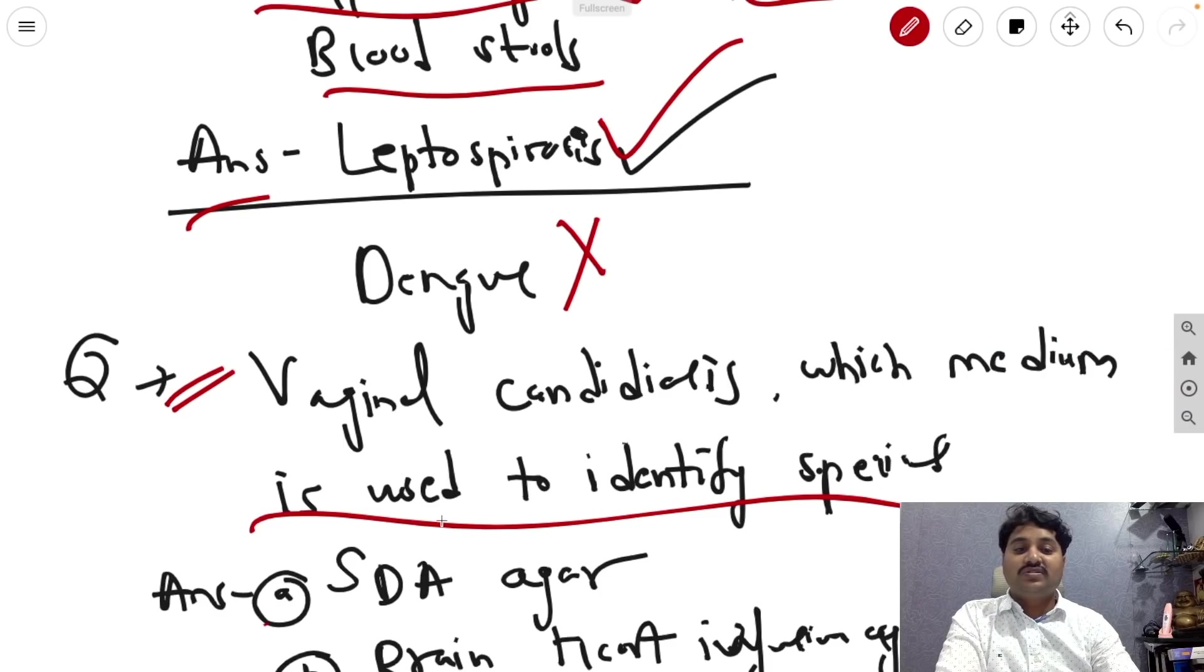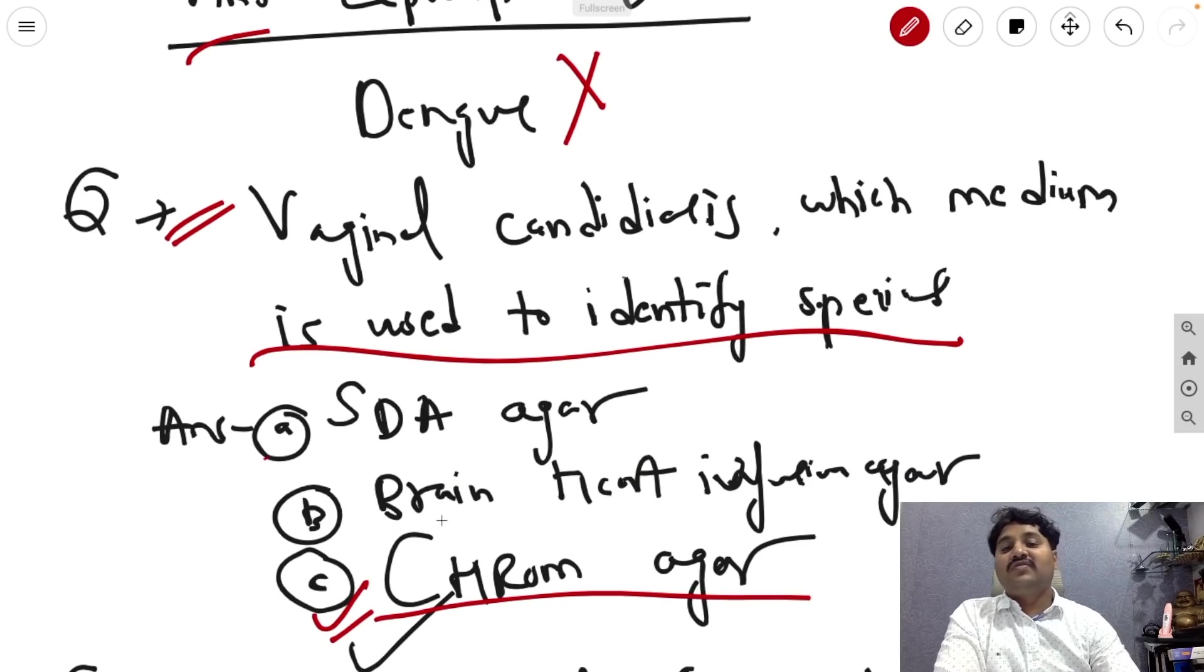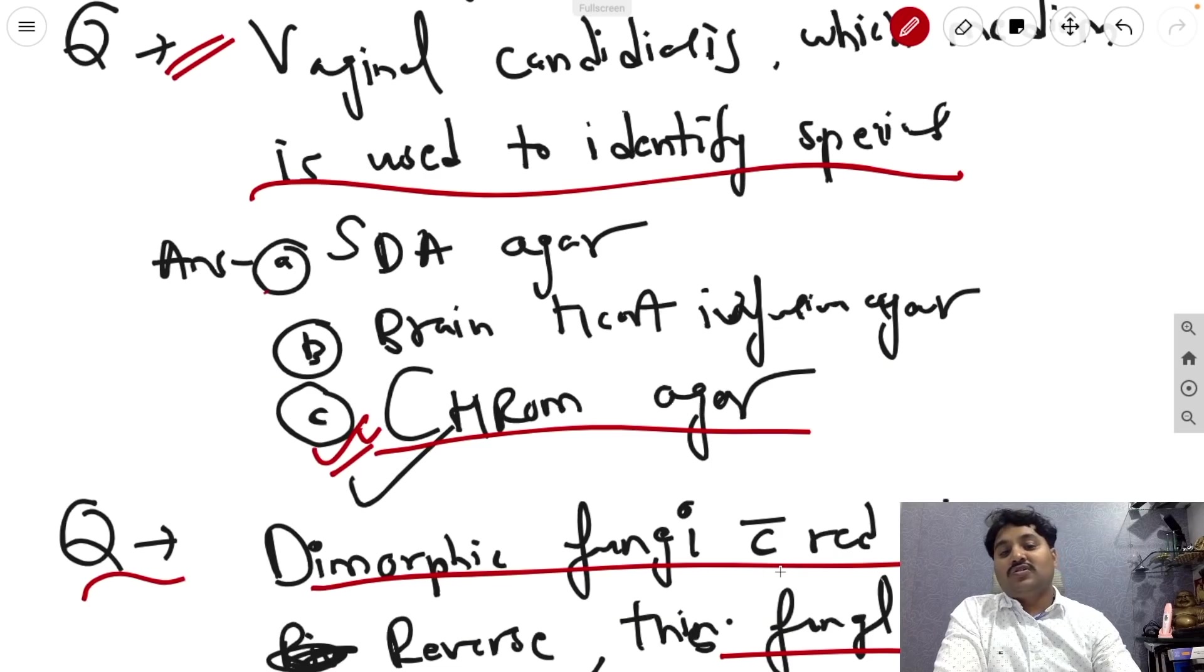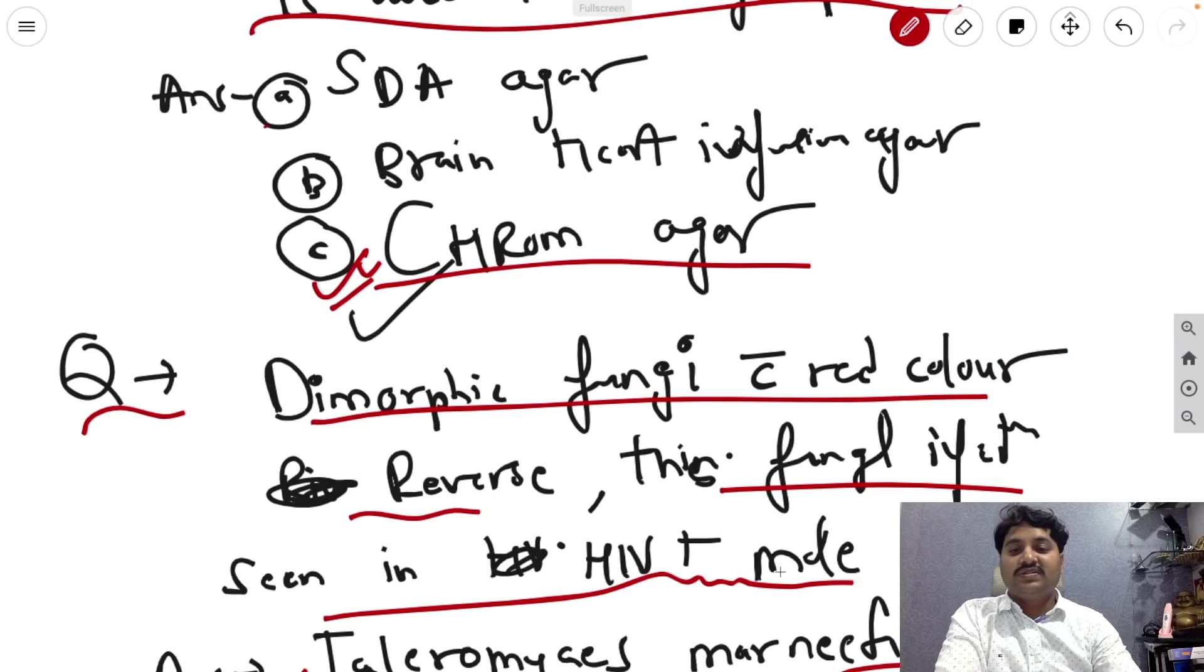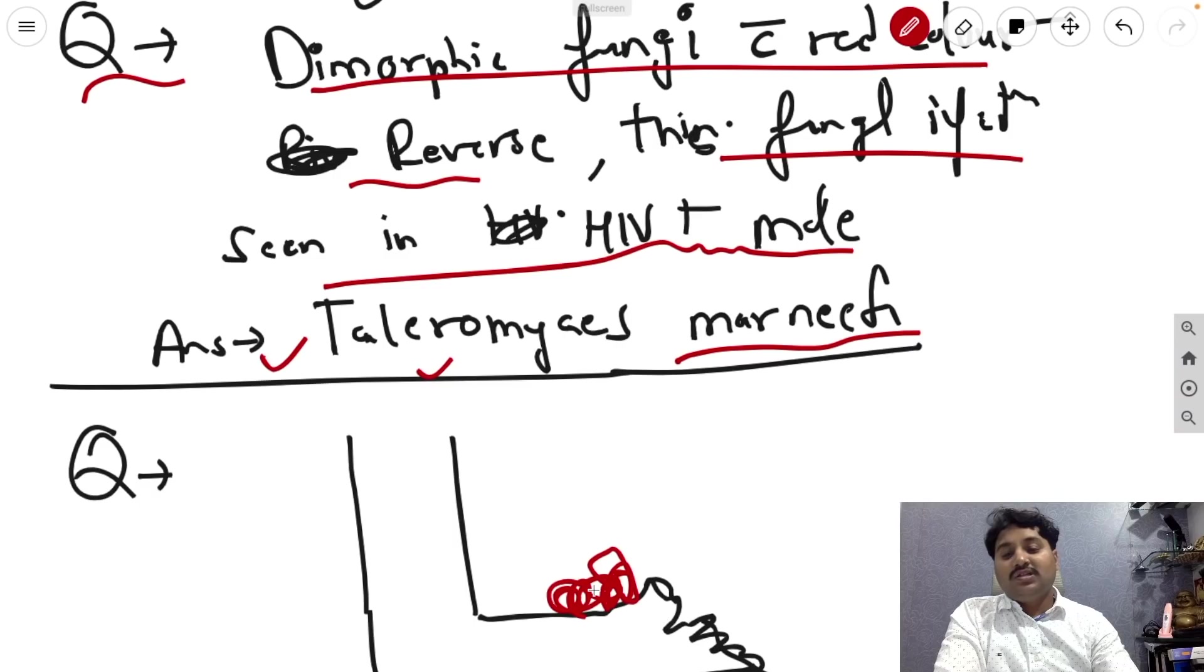Next, vaginal candidiasis, which medium is used to identify the species? In the available options, CHROM agar is the best agar, chrome agar, which is called in order to identify the species. Dimorphic fungus with red color, this fungal infection seen in HIV positive male. Answer is Talaromyces marneffei.